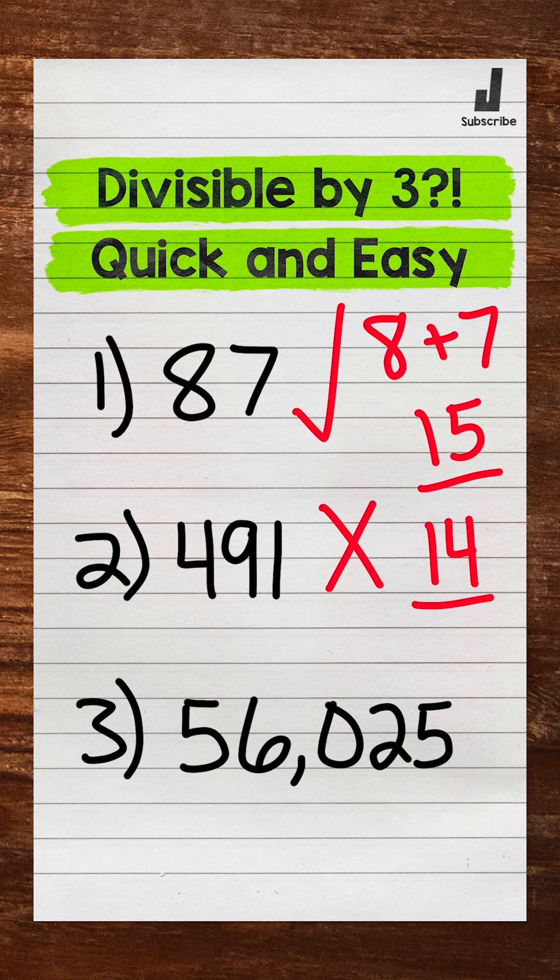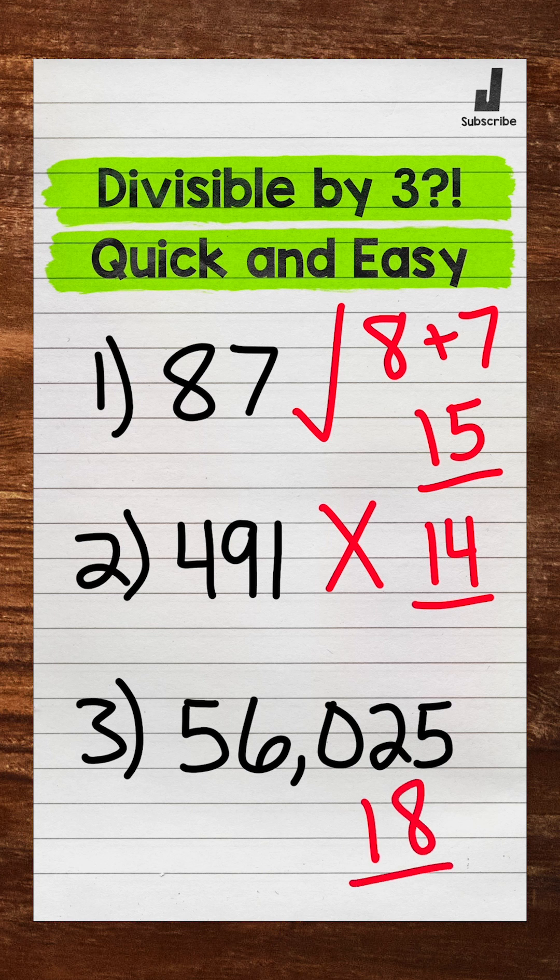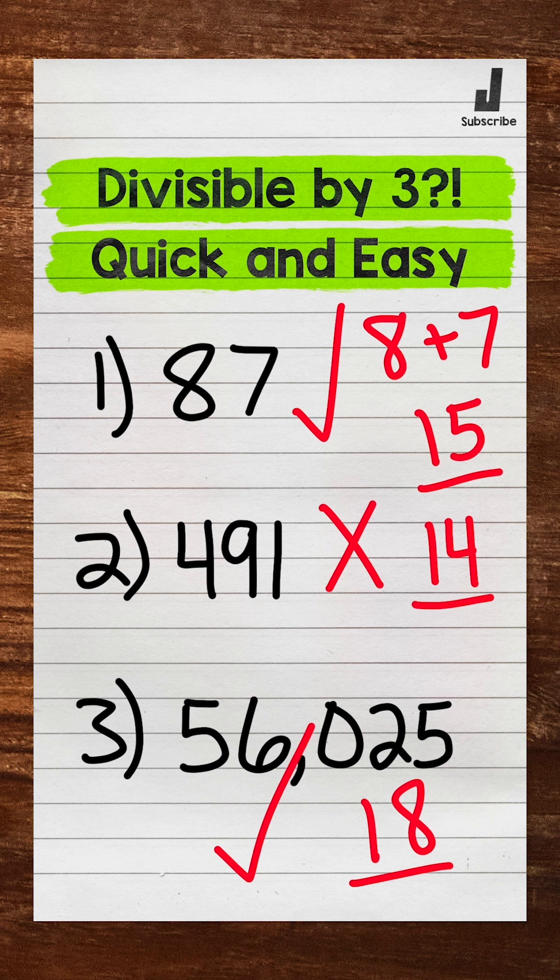How about 56,025? We have 5 plus 6 plus 0 plus 2 plus 5, which equals 18. Is 18 divisible by 3? Yes, so 56,025 is divisible by 3.